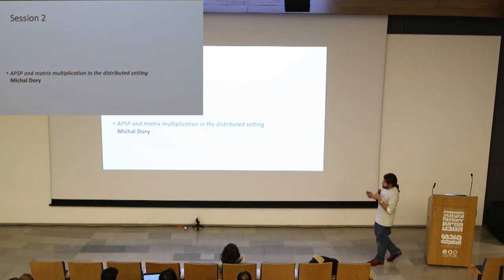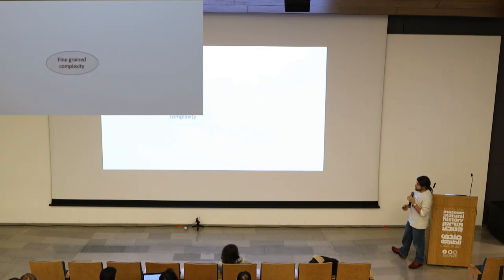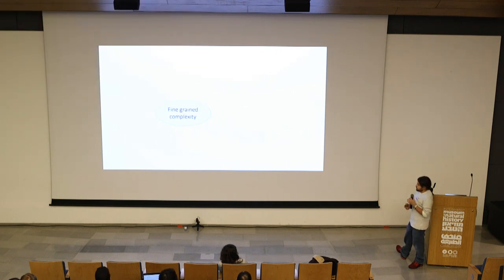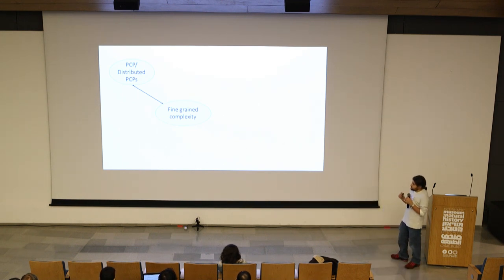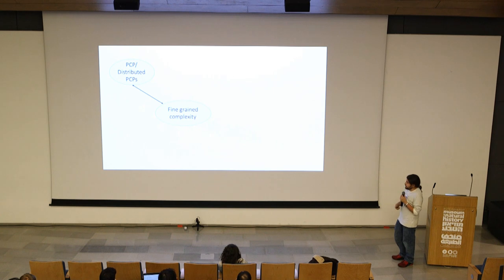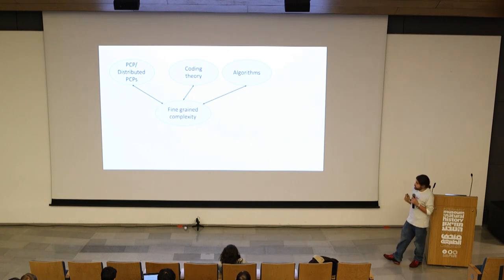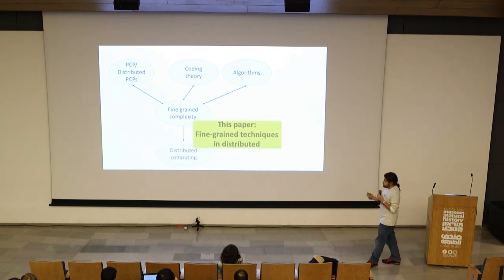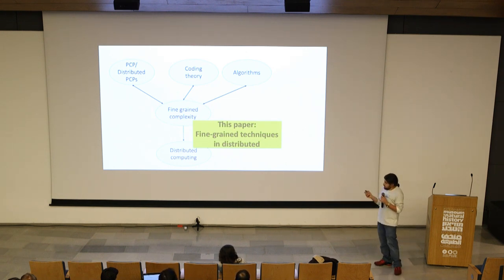The third talk is of a different nature. By now, fine-grained complexity has several connections with other areas in computation — there are connections with PCPs and distributed PCPs. Actually, as a teaser for the next session, you'll also see something about this connection in a talk by Karthik. There are also connections to coding theory, to algorithms, and probably many more. What we see in the third talk of this session is a new connection with distributed computing, where they take techniques from fine-grained complexity and use them to solve problems like all-pairs shortest paths in the distributed setting.